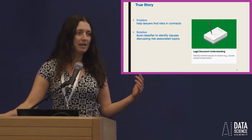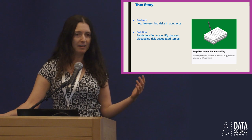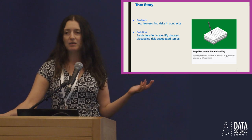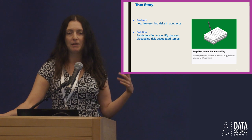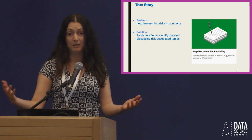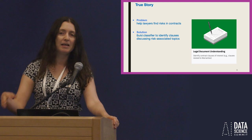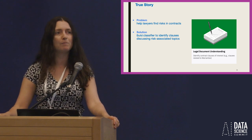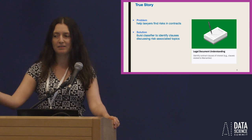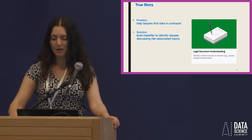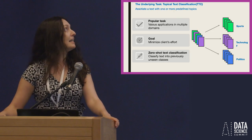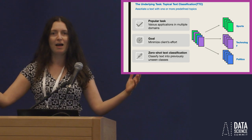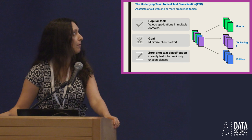It would be extremely helpful if we could build classifiers that automatically detect clauses within contracts associated with topics of interest — topics known to be associated with risks, for example privacy, warranties, and others. This problem falls under the large umbrella of topical text classification.